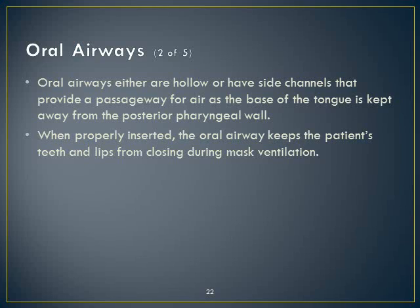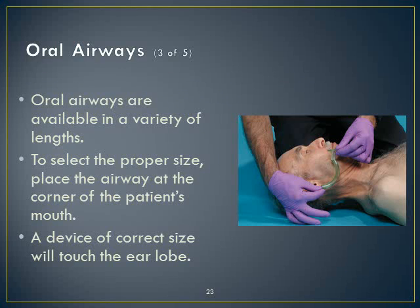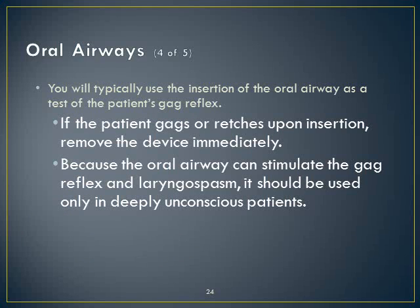If an OPA is too big, it will itself occlude the airway. OPAs come in a variety of lengths and must be sized properly. We measure from the corner of the mouth to the angle of the jaw or the earlobe — all the same reference point. You can see in the picture how to measure it.